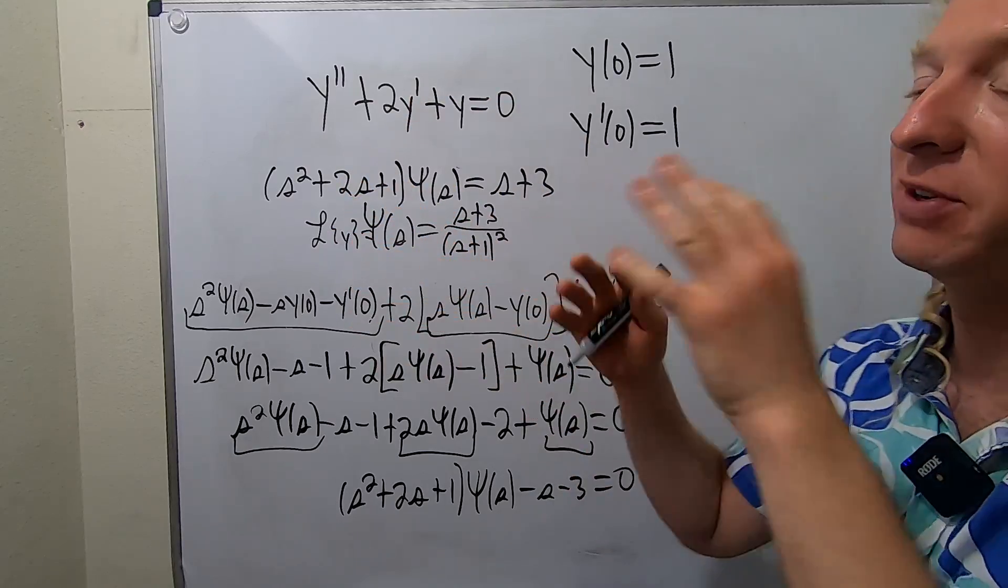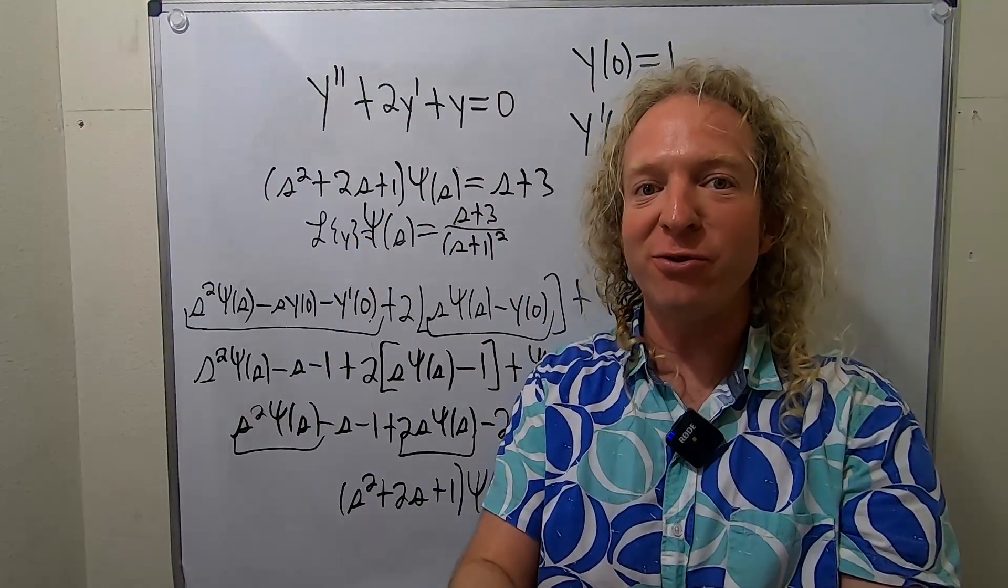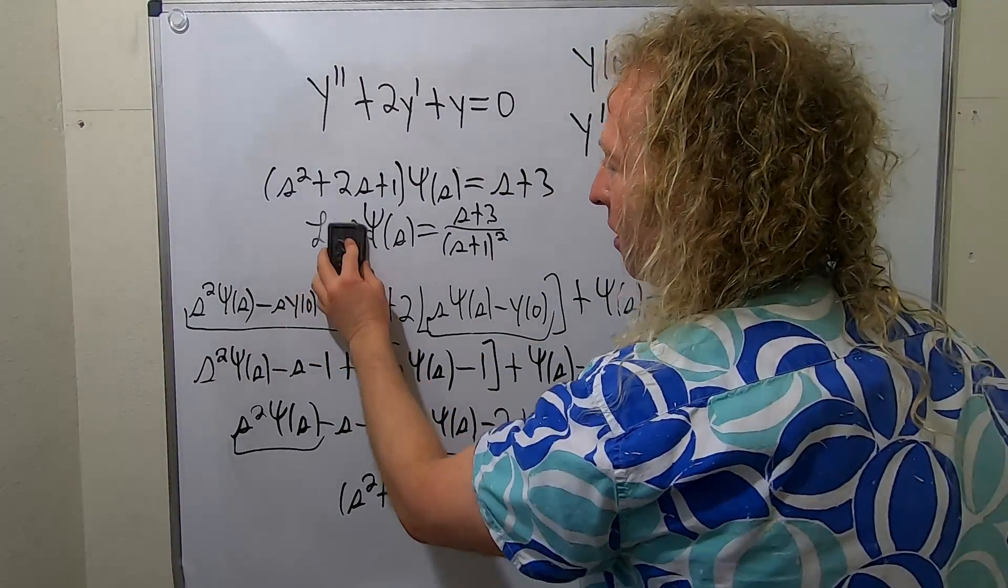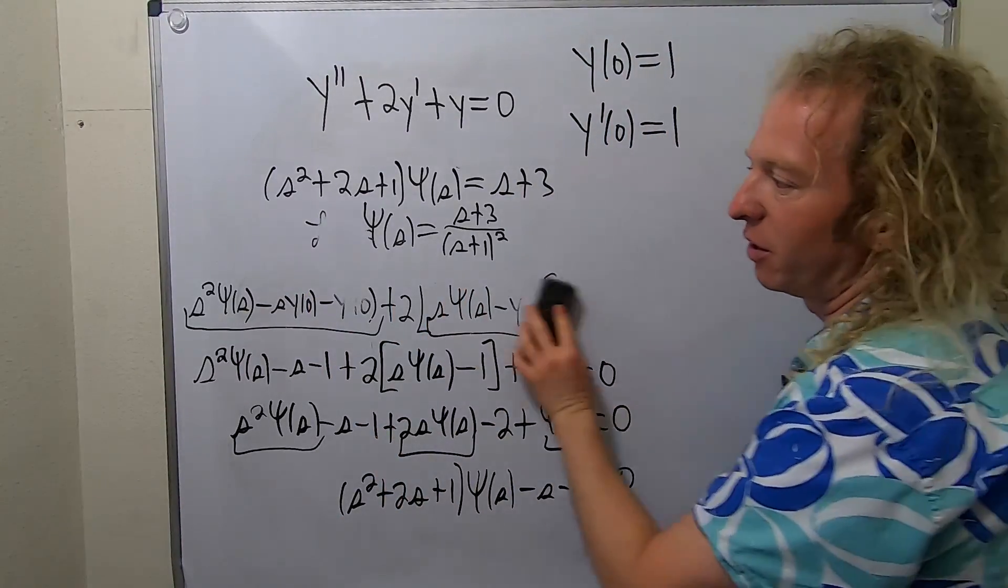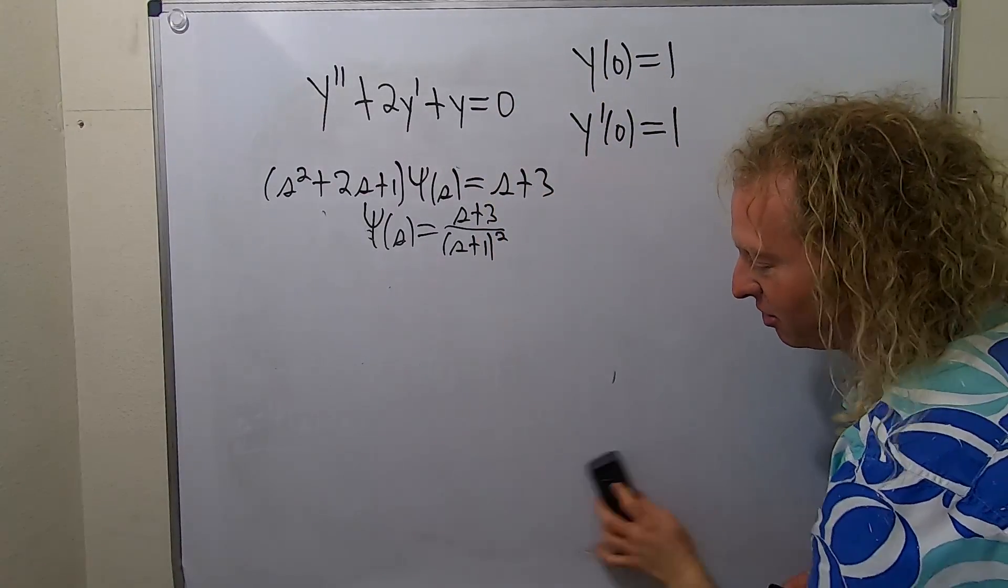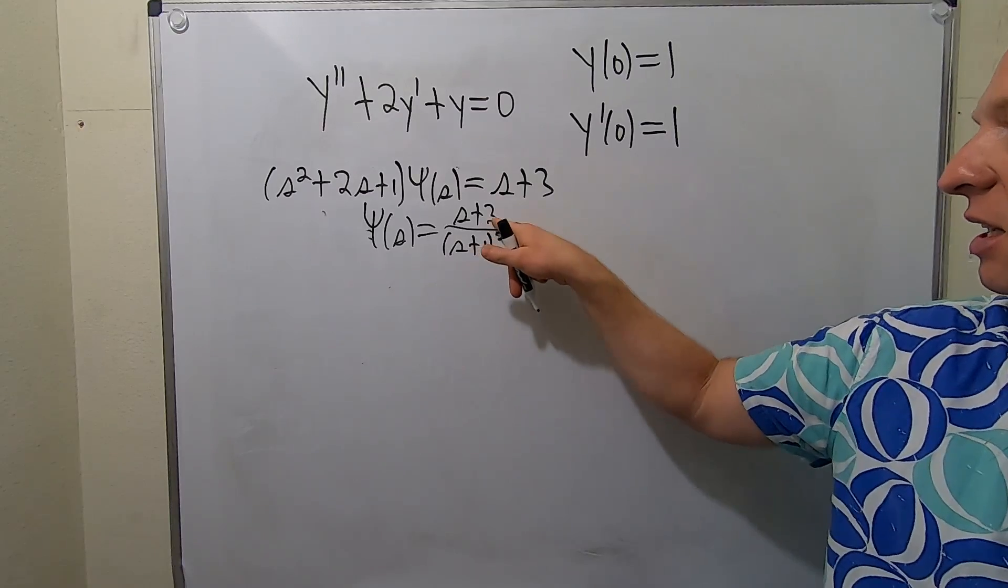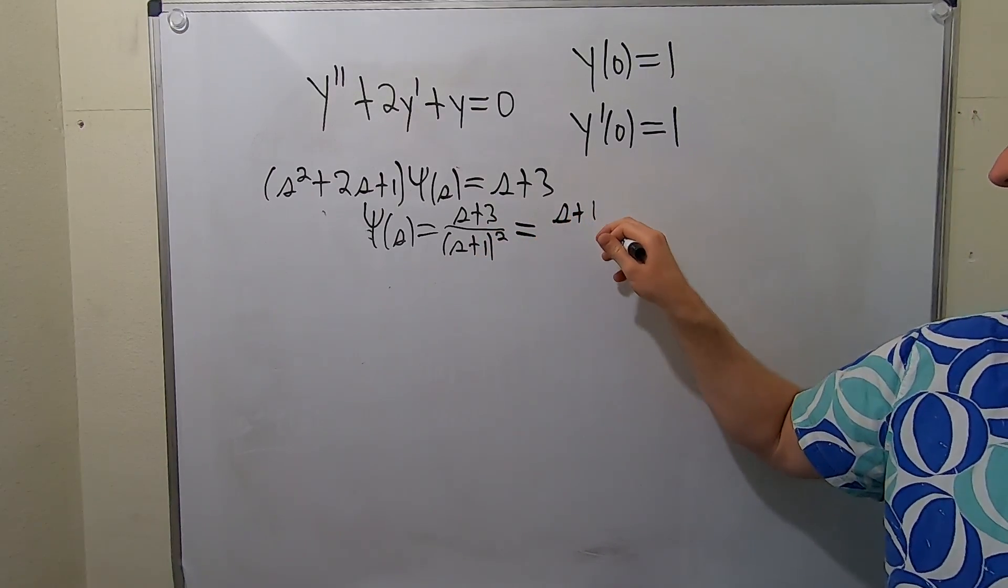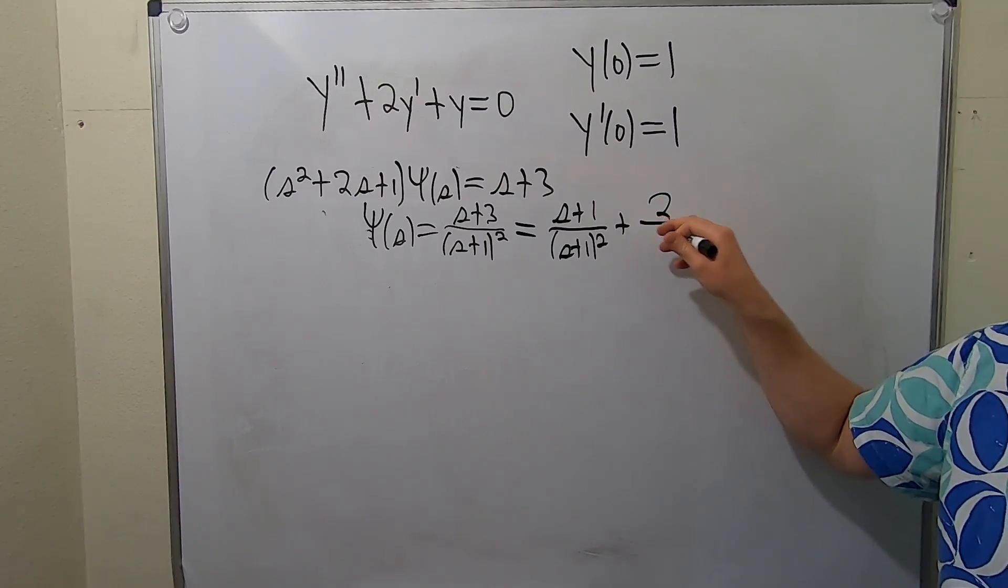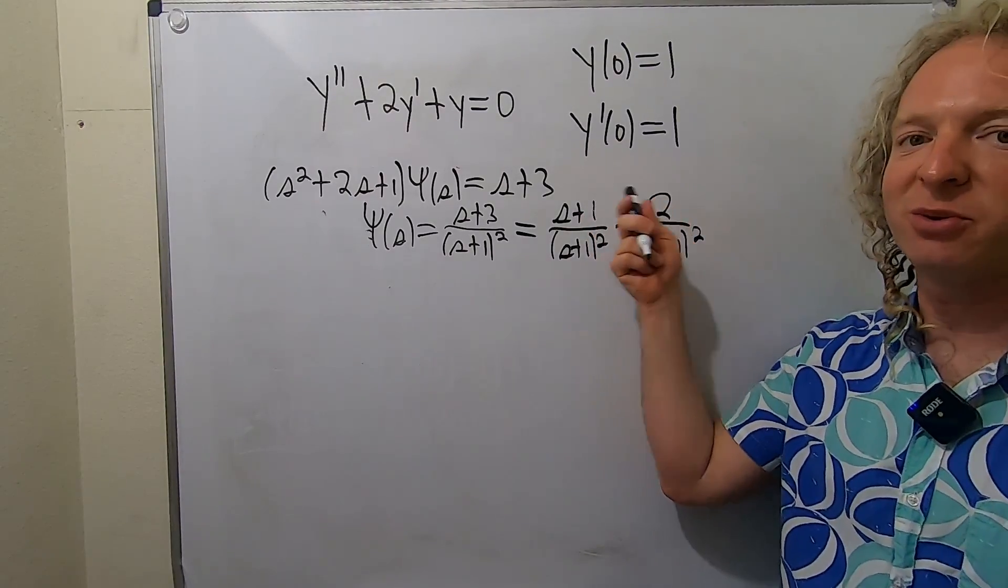So it's ridiculous. So you basically take the Laplace transform of the DE, you solve the Laplace of Y, and then you find the inverse Laplace and you're done. That's the idea. So to find the inverse Laplace of this, we have to rewrite this. And this is a fun one. I like this. I didn't notice what happened. This is cool. Check this out. The technique is to write this as S plus one over S plus one squared plus two over S plus one squared.